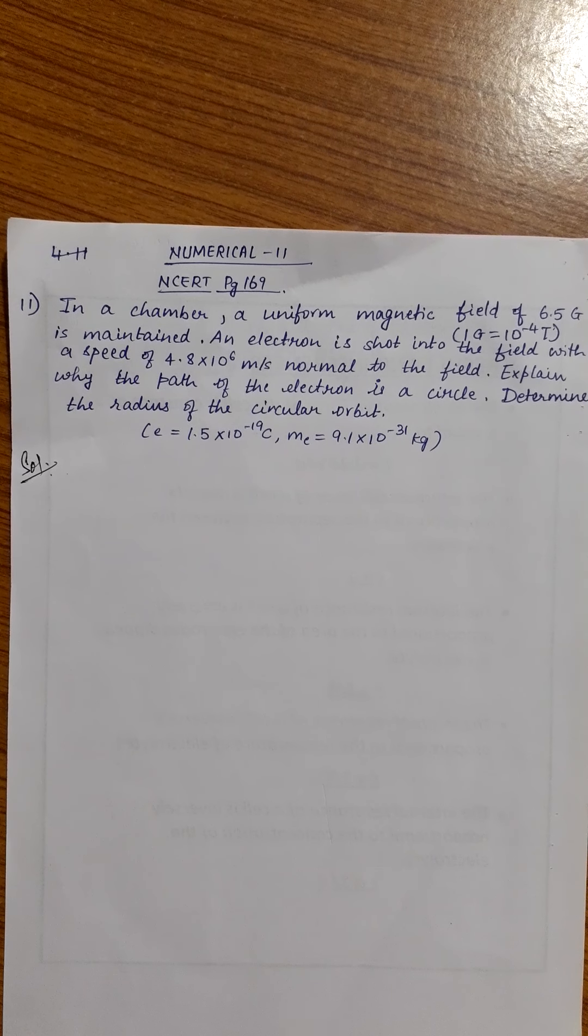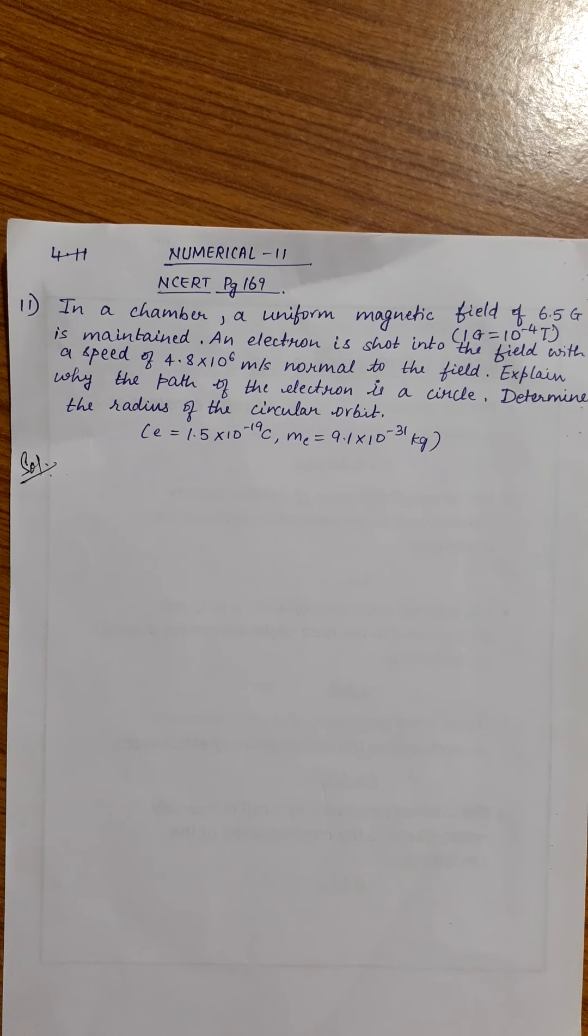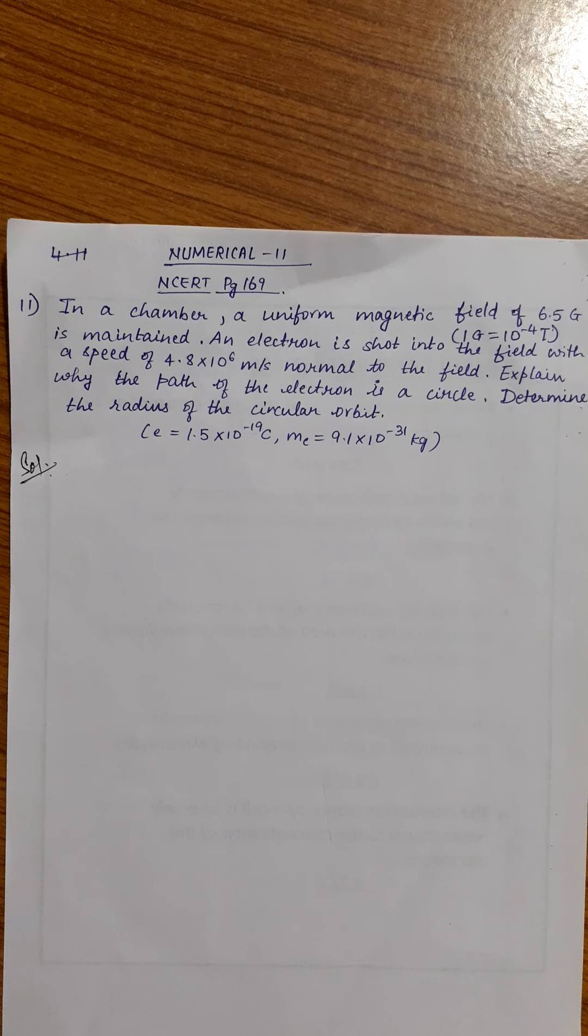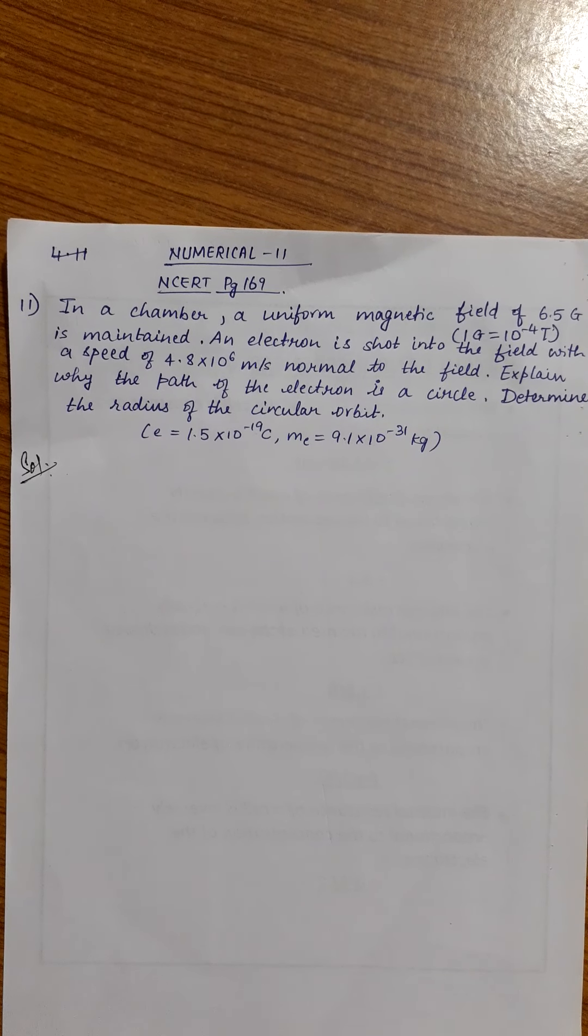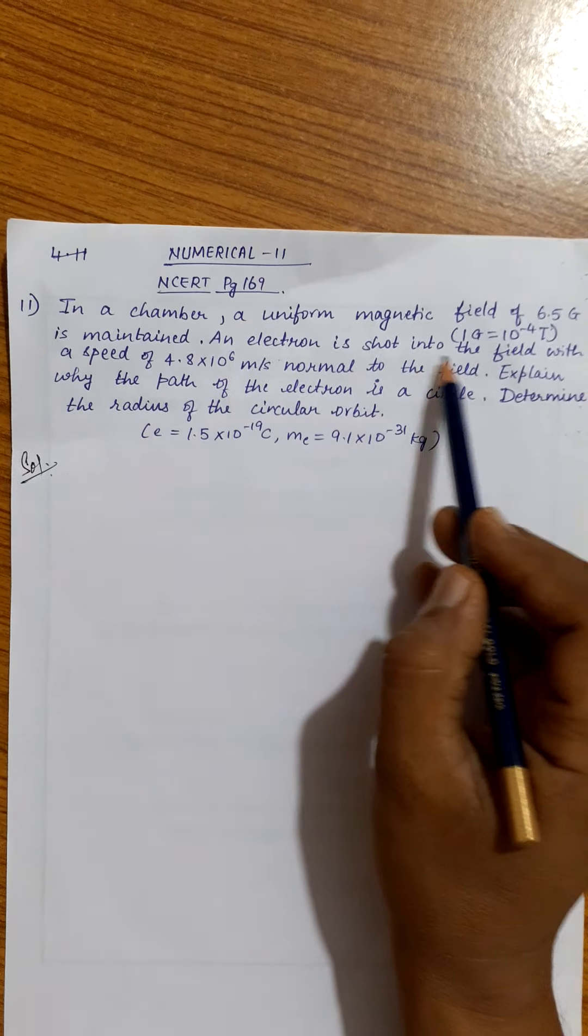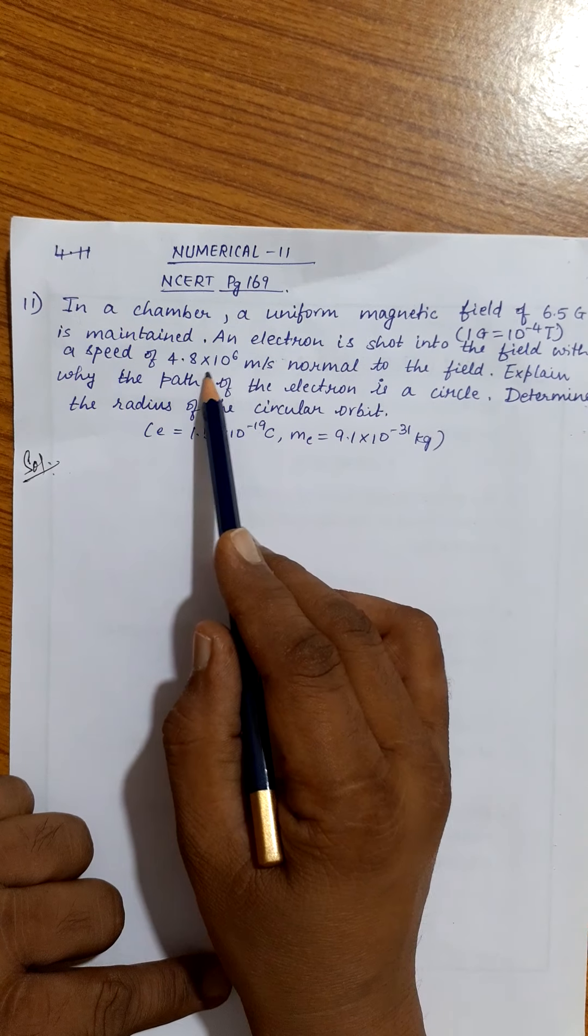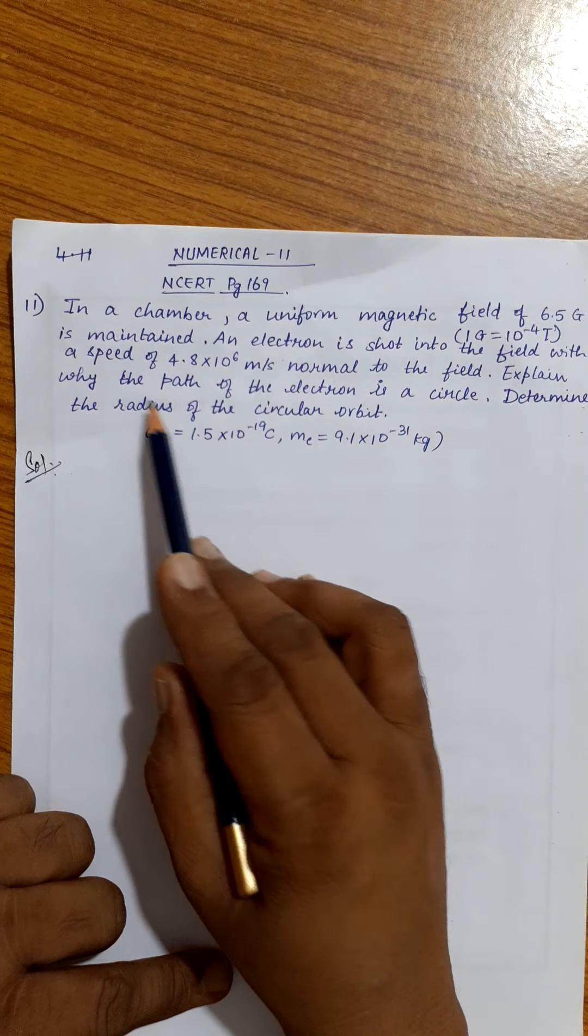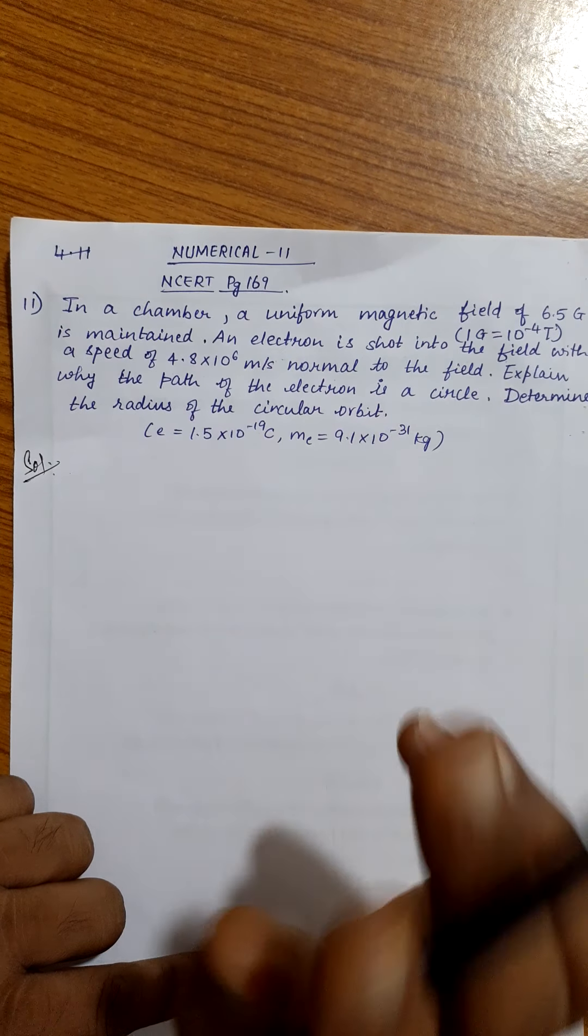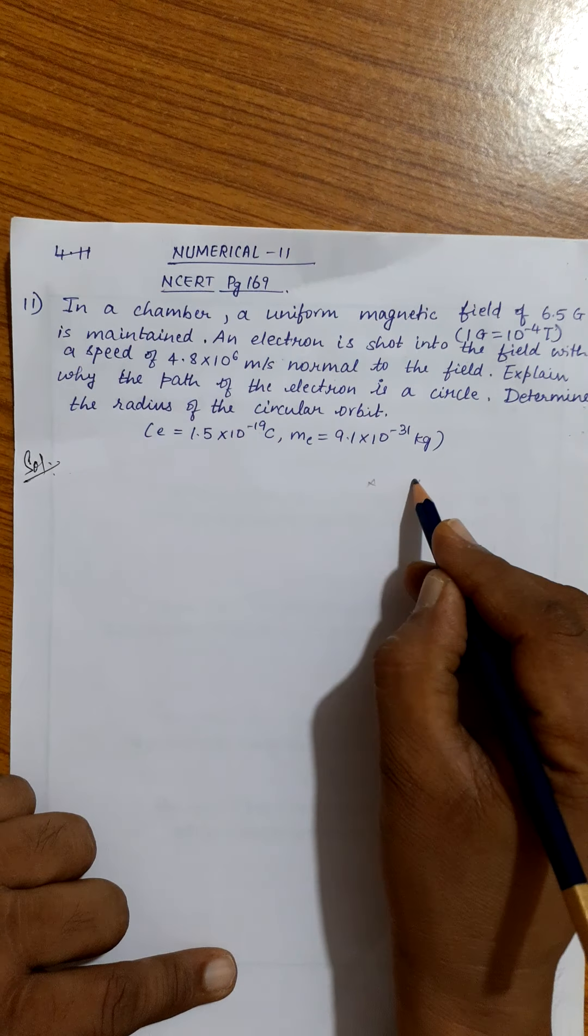In a chamber, a uniform magnetic field of 6.5 gauss is maintained. An electron is shot into the field with a speed of 4.8 into 10 power 6 meter per second normal to the field. Explain why the path of the electron is a circle. Determine the radius of the circular orbit. That means we have provided a magnetic field.